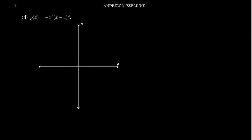Let's do one more example. Let's take the polynomial p of x equals negative x cubed times x minus 1 squared. If you've been following this series, I'd encourage you to pause the video and try this example on your own, because I think you have the skills to do it. So let's graph p of x equals negative x cubed times x minus 1 squared.